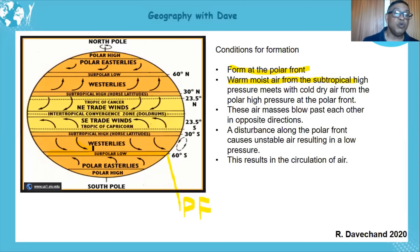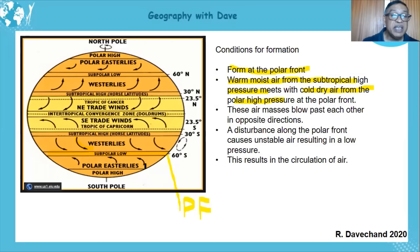The warm moist air meets with the cold dry polar high pressure air at the polar front. Due to the rotation of the earth and the Coriolis force, the air is deflected. Warm moist air from the subtropical high cell and cold dry air from the polar cell meet on both sides of the polar front and blow past each other in opposite directions.